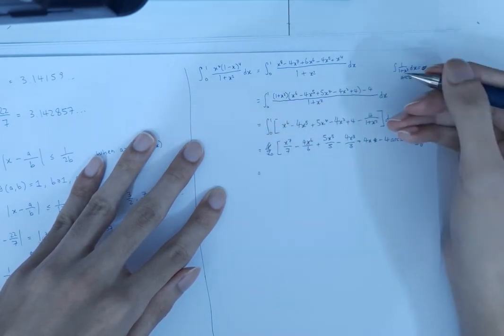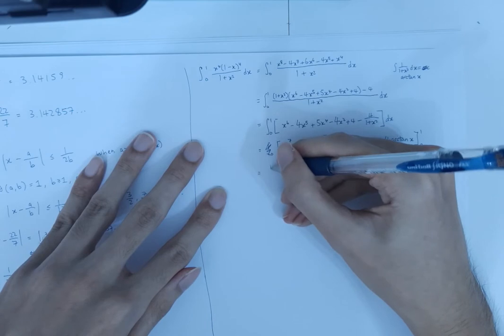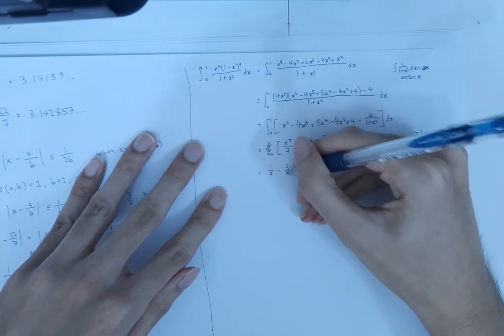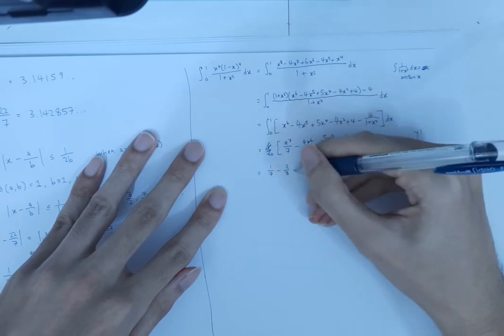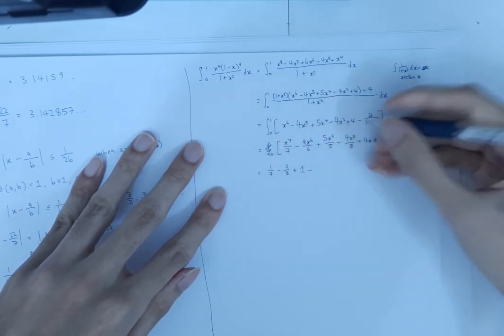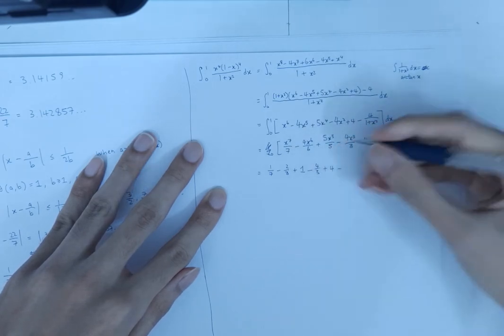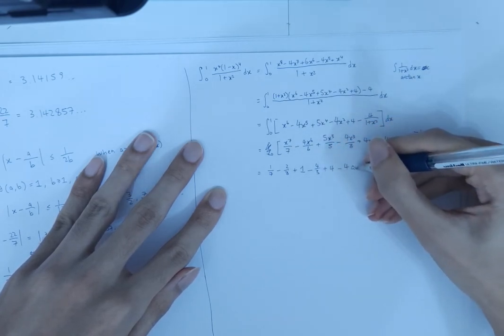So 1 power anything is 1, so that's quite simple. This becomes 1 over 7, minus 4 over 6, so that's 2 thirds, plus 5 over 5, that's 1, minus 4 over 3, plus 4, minus 4 times arctangent of 1.